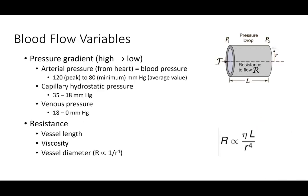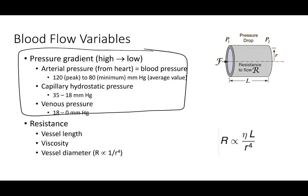The driving pressure: if someone has a blood pressure of 120 over 80, then on the arterial side it's 120 mmHg, and at the right atrium it's zero. The pressure gradient from the left side of the heart through the aorta all the way to the end of the vena cava goes from 120 to 0 mmHg — that's the driving pressure through our blood vessels.